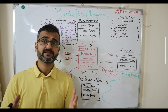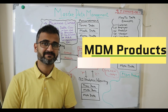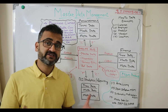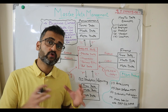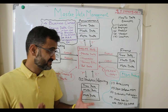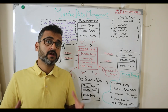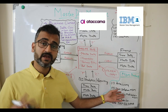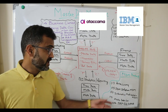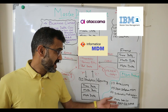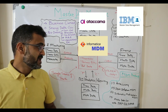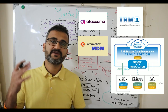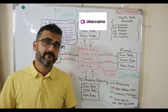Now let's understand some products in the market that help implement MDM. There are four products worth knowing. Atacama is a very renowned product for implementing data quality, data governance, and MDM solutions. IBM Infosphere MDM is also a very good product. Informatica has always been an exceptional ETL product and it has a product called Informatica Multi-Domain MDM. And last but not least, SAP ERP has a specific product — Master Data Governance with SAP S/4HANA — which is a cloud-based product offering from SAP.